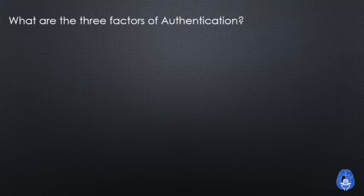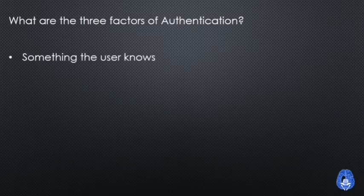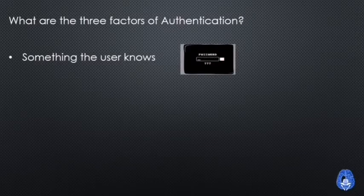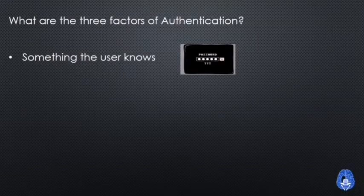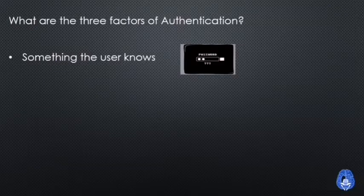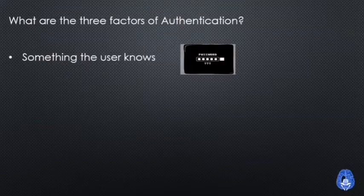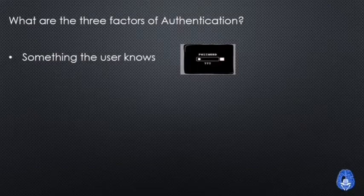Now let's see what are the three factors of authentication. The first one is something the user knows. As you can see on screen, it shows a password — so password is something the user knows. This is the first factor of authentication.